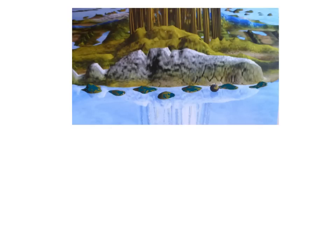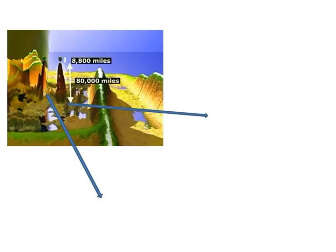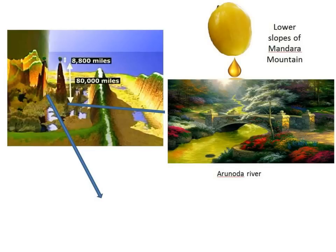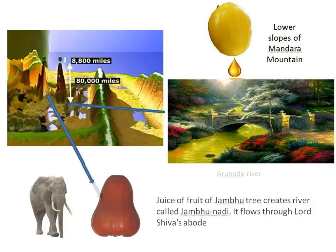We see Jambodvip from slightly further away this time, with the little Earth there, amongst other realms. Compared with the size of Mount Meru, the Earth there, just on the right of the picture, you can see they are absolutely huge. For example, some of the mountains have been 80,000 miles high, and even trees nearly 9,000 miles high. Various celestial realms with rivers, with mango juice, and the juice of the Jambu tree creates a river called Jambunadi. It flows through Lord Shiva's abode. So no way are we talking here about abodes on the Earth. Rather, we're talking about the abodes of the gods connected to the Earth.